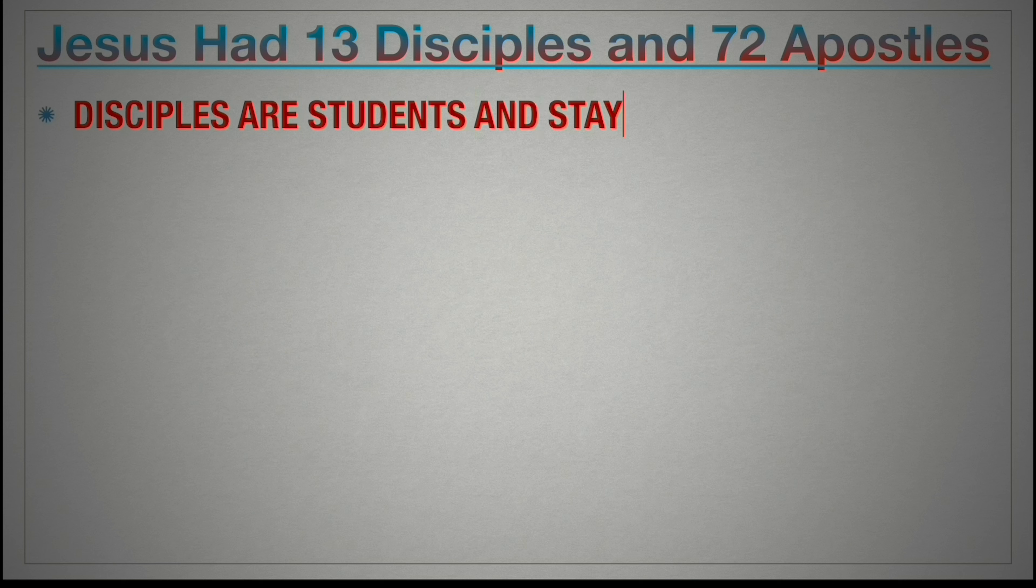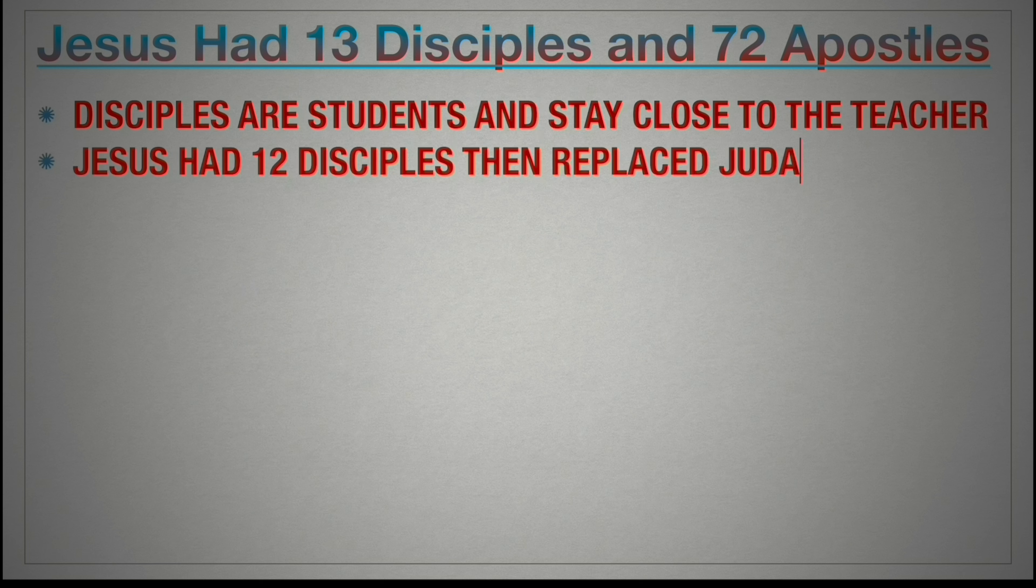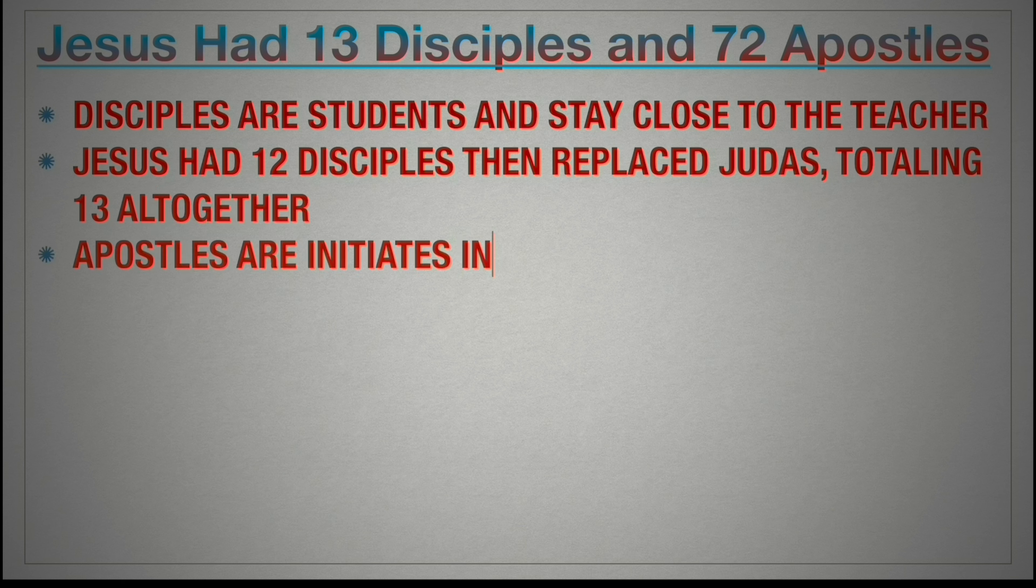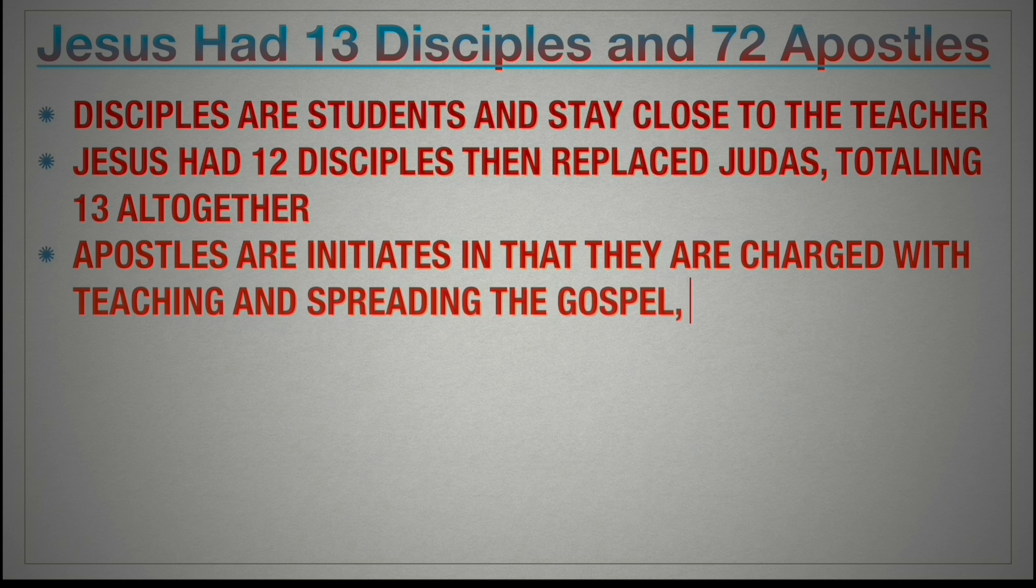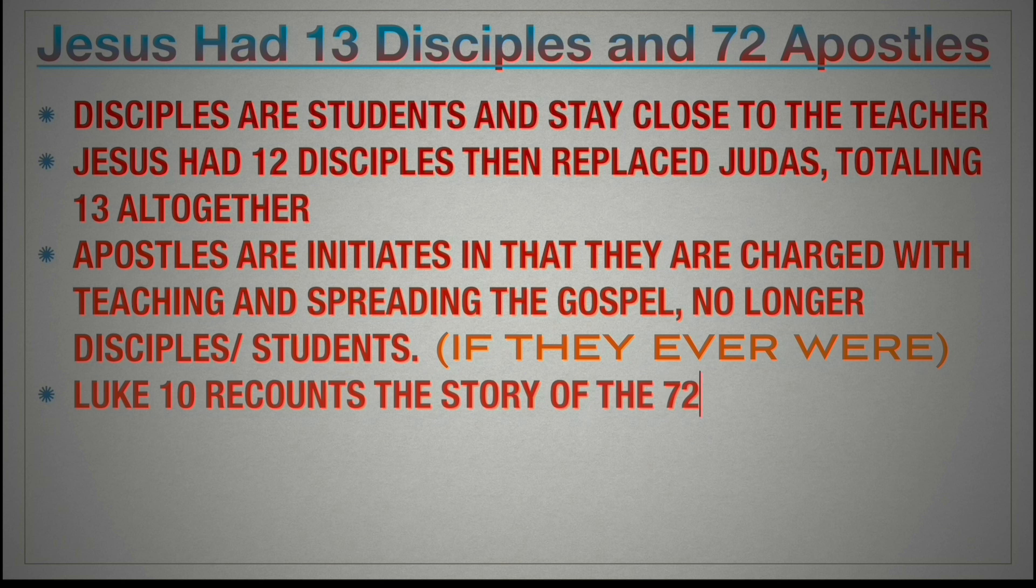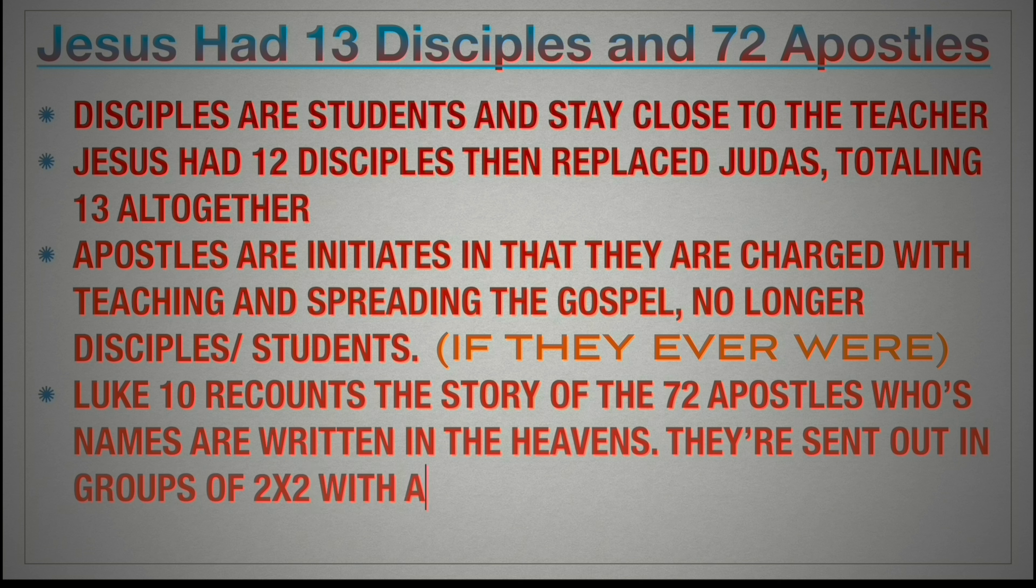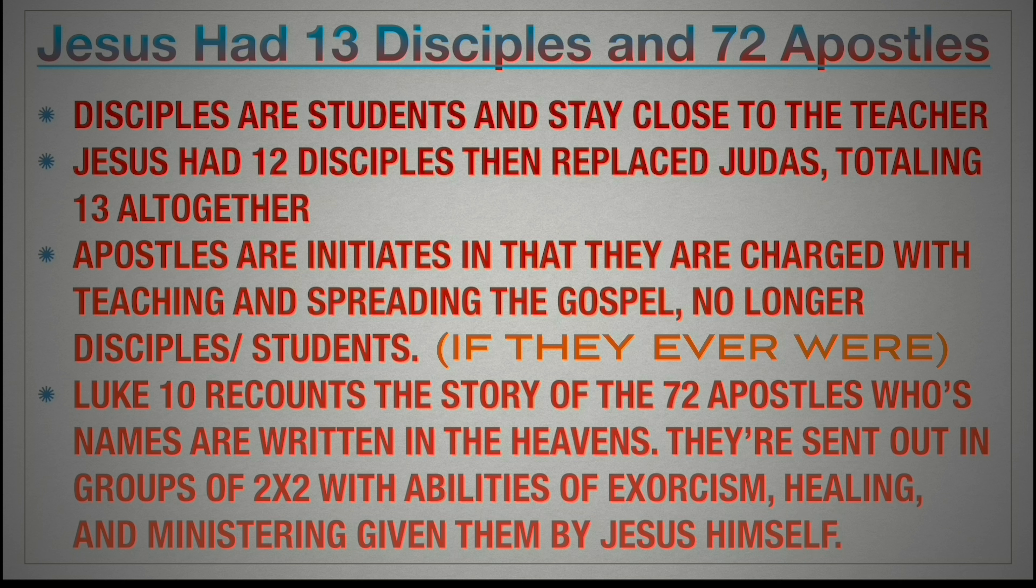Disciples are students and stay close to the teacher. Jesus had 12 disciples, then replaced Judas, making 13 altogether. Apostles, on the other hand, are initiates charged with teaching and spreading the gospel, no longer disciples or students. Luke 10 recounts the story of the 72 apostles whose names are written in the heavens according to Christ. They're sent out in groups of two by two with abilities of exorcism, healing, and ministering given to them by Jesus himself.